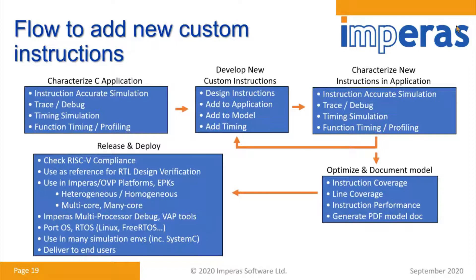We have a whole flow for adding custom instructions usable in a RISC-V world and also in an ARM world. Basically you characterize your application, get timing information so you can do full timing and profiling when running at a C-level on the simulator, find out where it's spending its time, work out which instructions are slow, add new custom instructions into your application and into the model, then recharacterize and iterate. When you're happy, you can wrap up the model, check it's compliant, use it as a reference in your DV, and use it for software development.